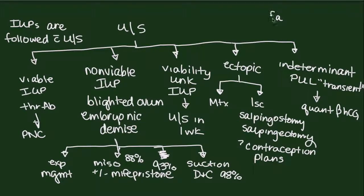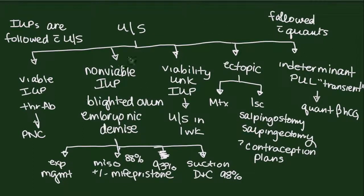These patients with a pregnancy of unknown location are followed with quants, while patients with a definitively diagnosed IUP are followed with ultrasound. Ectopic pregnancies and IUPs definitively diagnosed by ultrasound will comprise about 70% of these patients. Only about 30% of patients will have an indeterminate ultrasound and end up in the pregnancy of unknown location category.